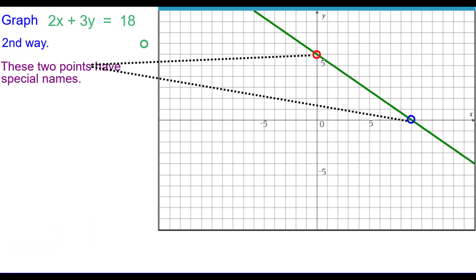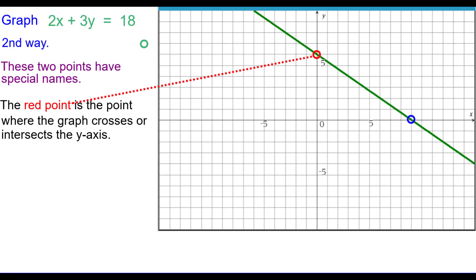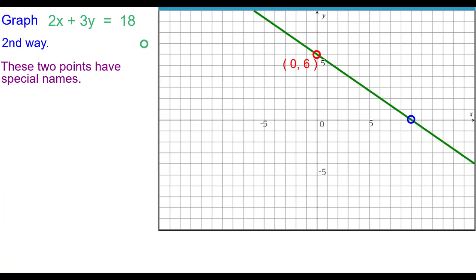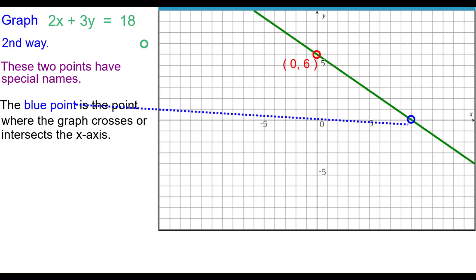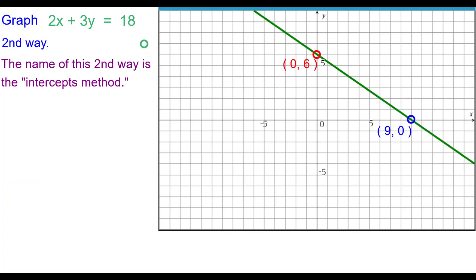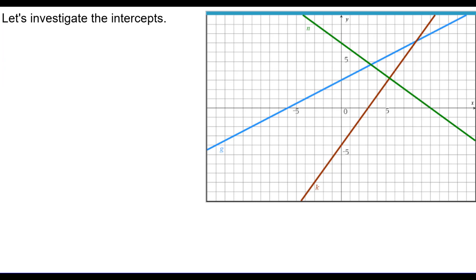Now these two points have special names. The red point is the place where the graph crosses or intersects the Y axis. We call this point the Y intercept. What are the coordinates of this Y intercept? 0 comma 6. The other point, the blue point, is the point where the graph crosses or intersects the X axis. We call this point the X intercept. And the coordinates of the X intercept in this case are 9 comma 0. The name of this second way is called the intercepts method. We did the first way by table. Second is the intercepts method. We'd like you to understand both. The advantages of using the intercepts method though are, it's quick and there's less chance of making a mistake because you're working with a nice number like 0.